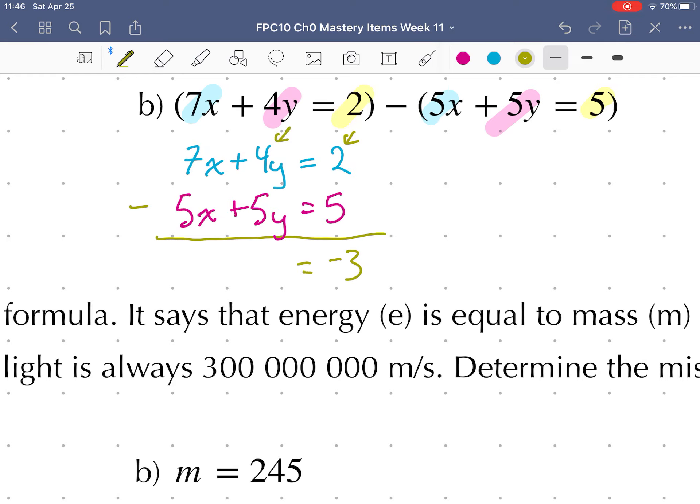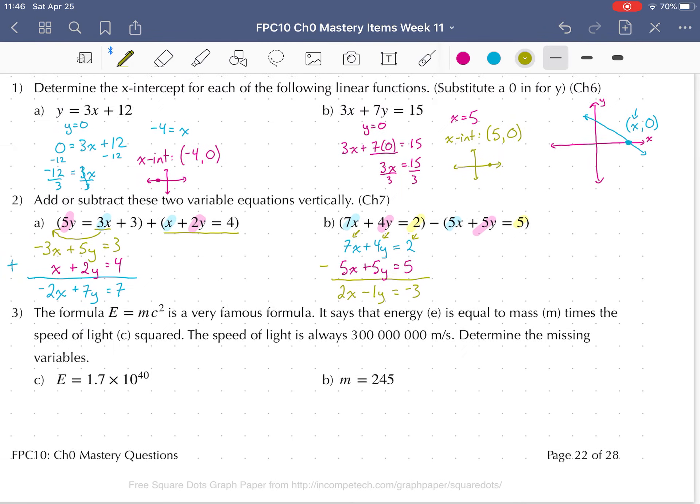Then we go over to our y's. What's 4y, positive 4y, take away positive 5y? Negative 1y. Lastly, we do our subtraction on our x's. What's 7x take away 5x? 2x. In chapter 7, when we get there, you'll see the reason why we do this.